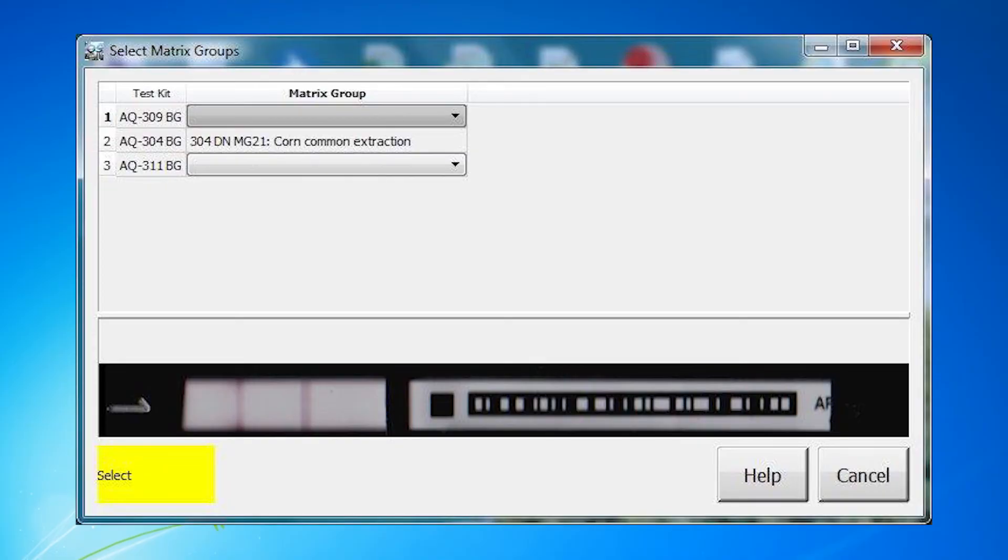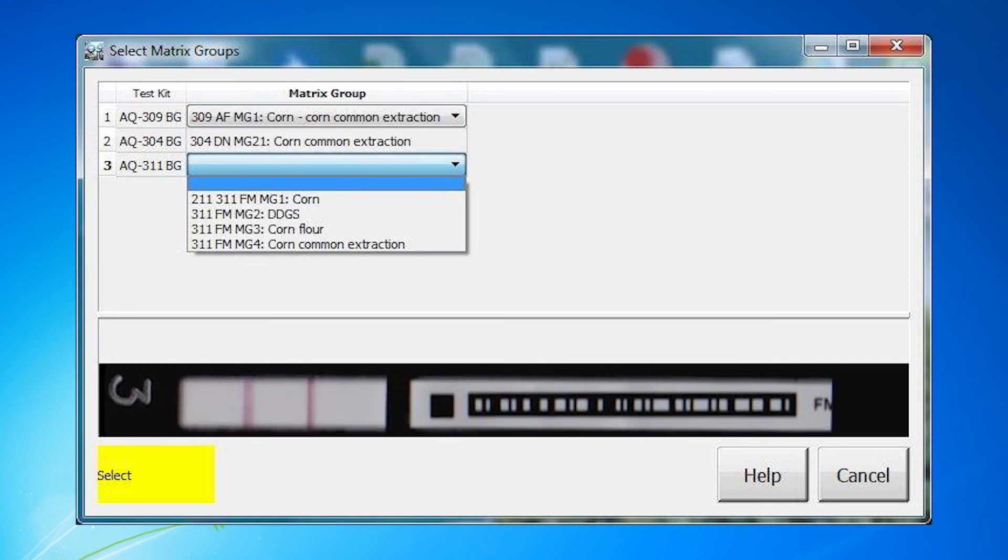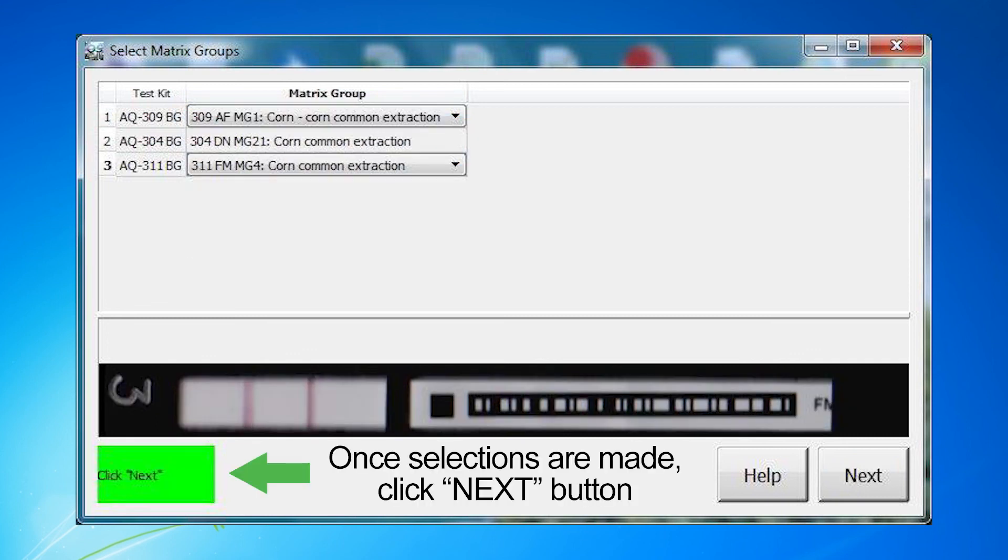On the results screen, select the appropriate common extraction matrix group for each mycotoxin test strip. For example, select MG1 for Aflatoxin, MG21 for DON, and MG4 for Fumonisin.